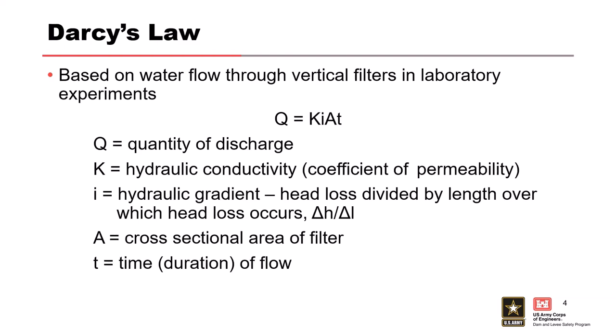Q is the quantity of discharge through that filter or model. K is the hydraulic conductivity — in seepage analyses and everyday geotechnical engineering discussion we call it permeability, but the true term is either coefficient of permeability or hydraulic conductivity, so I'll use hydraulic conductivity. Hydraulic gradient is I — that's the head loss across your model divided by the length over which that head loss occurs, delta H over delta L. A is the cross-sectional area through which flow is occurring.